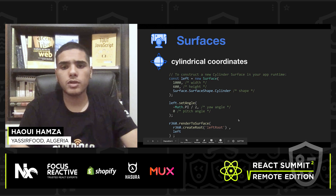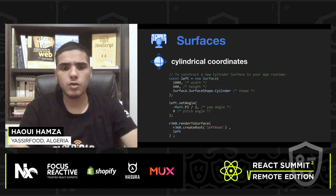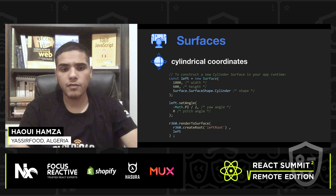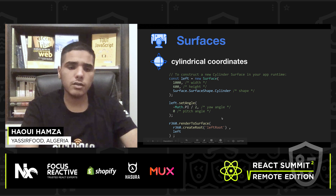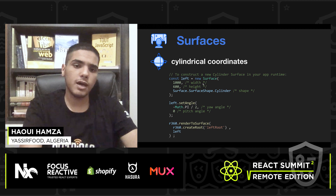The most important thing in VR is surfaces. We use surfaces to render 2D UI components and we have two types of surfaces: the cylinder surface and the flat surface. We have two angles — the yaw angle and the pitch angle — and every surface should have a width and height specified by the developer.